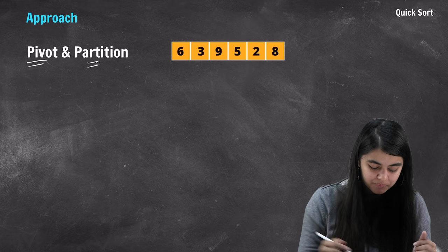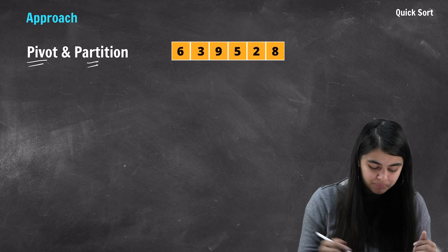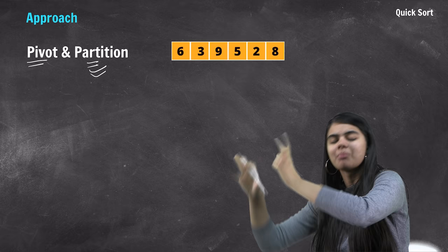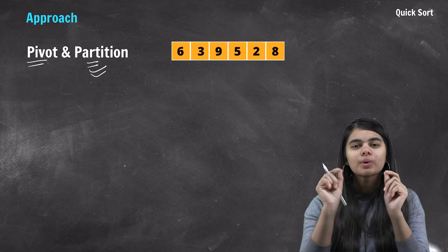The second keyword is partition. Partition means: once we place our pivot, we divide the array — some elements go before the pivot and some elements go after the pivot. That step is called partition. So these are the two keywords needed to implement the quicksort algorithm.